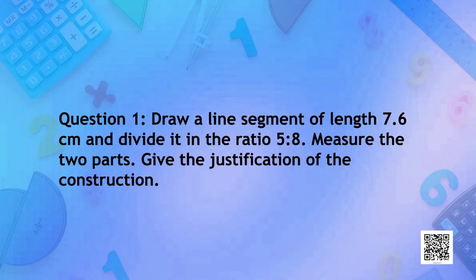The question is: draw a line segment of length 7.6 centimeters and divide it in the ratio 5 is to 8. Measure the two parts and then give the justification of the construction.